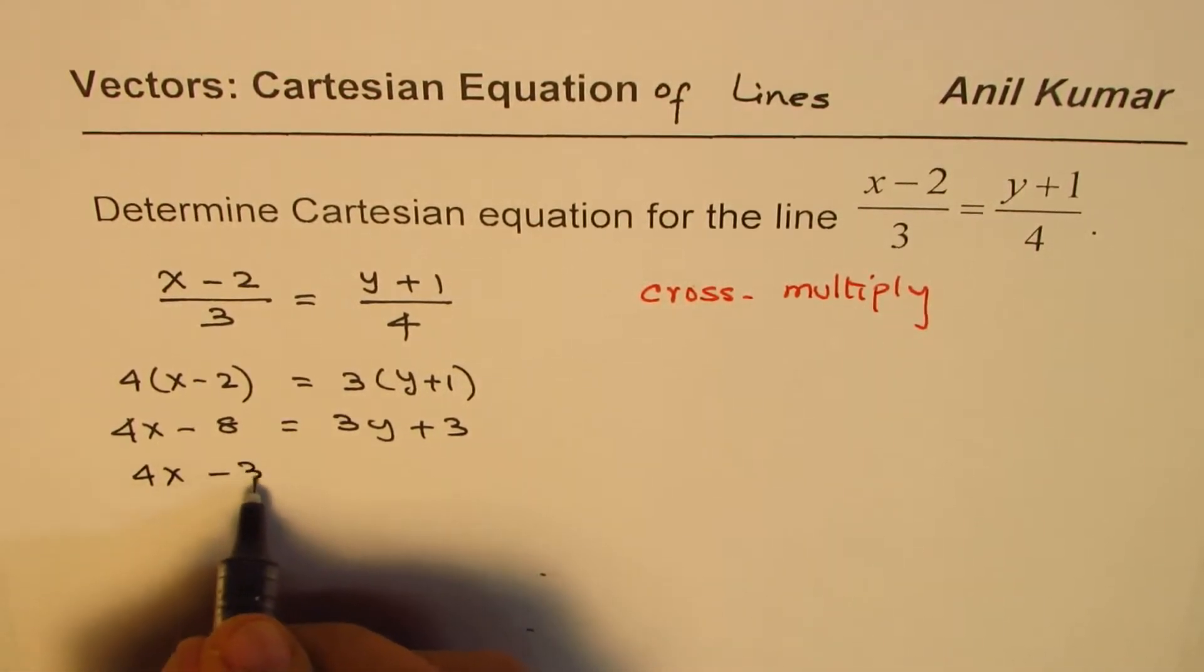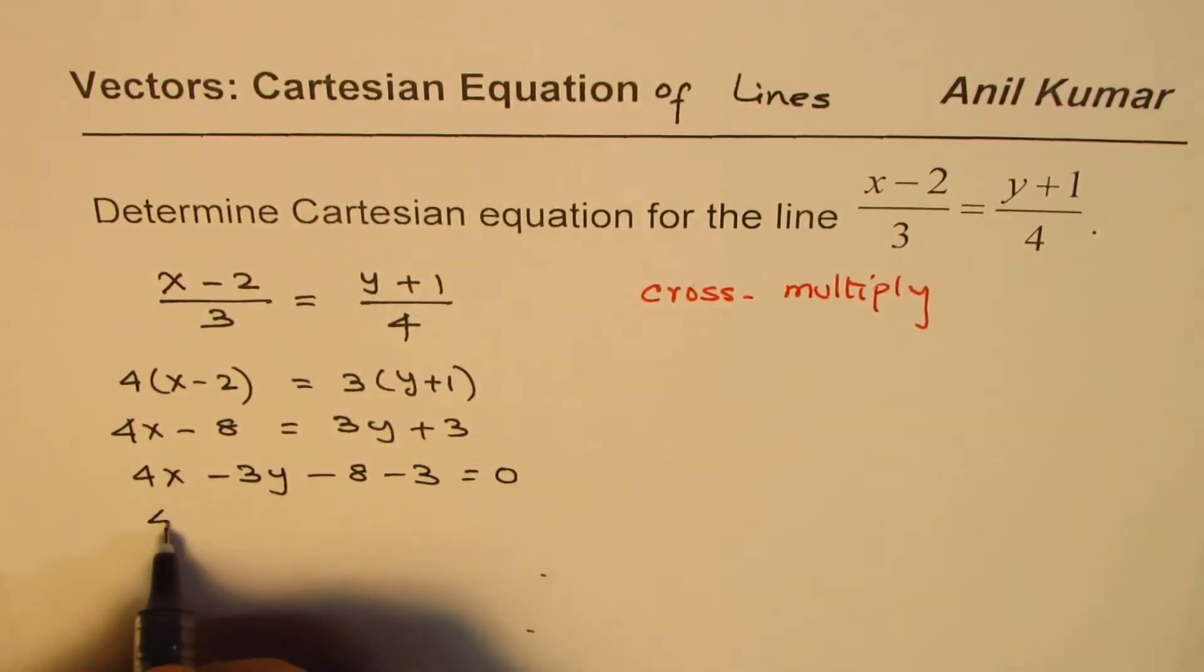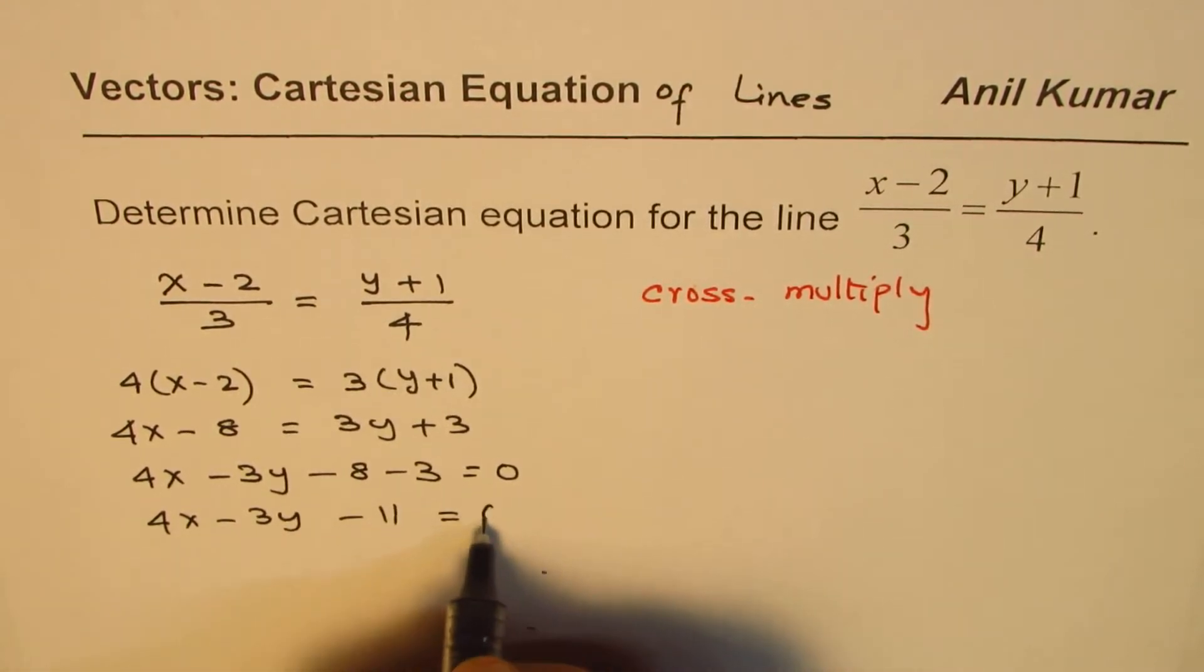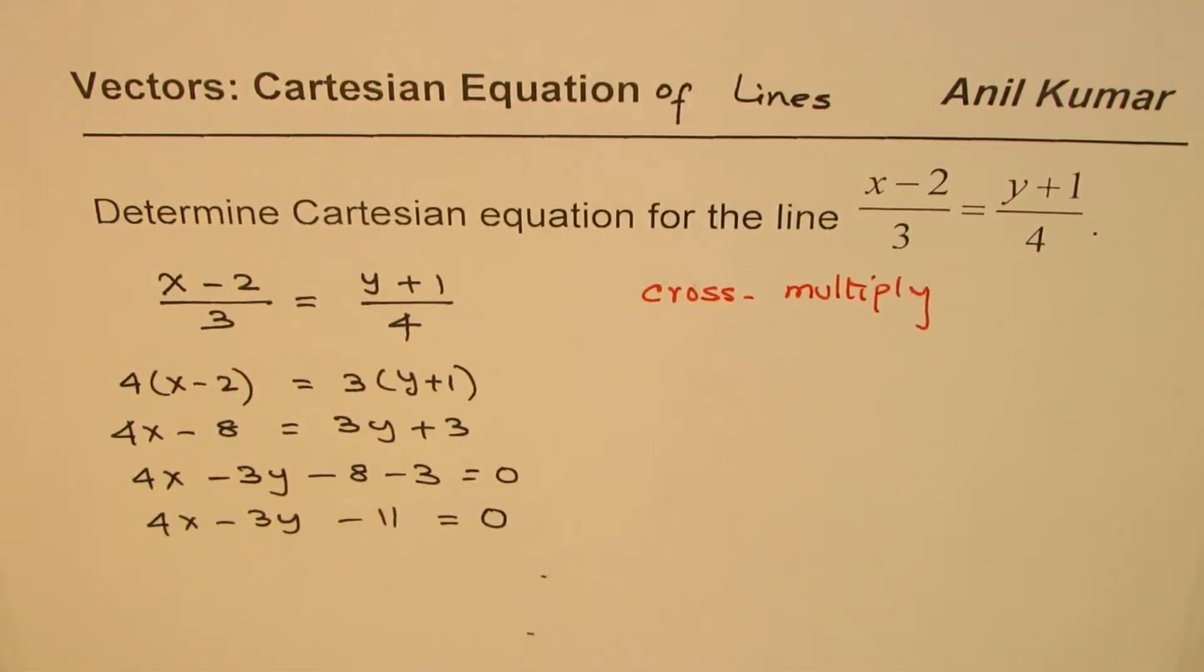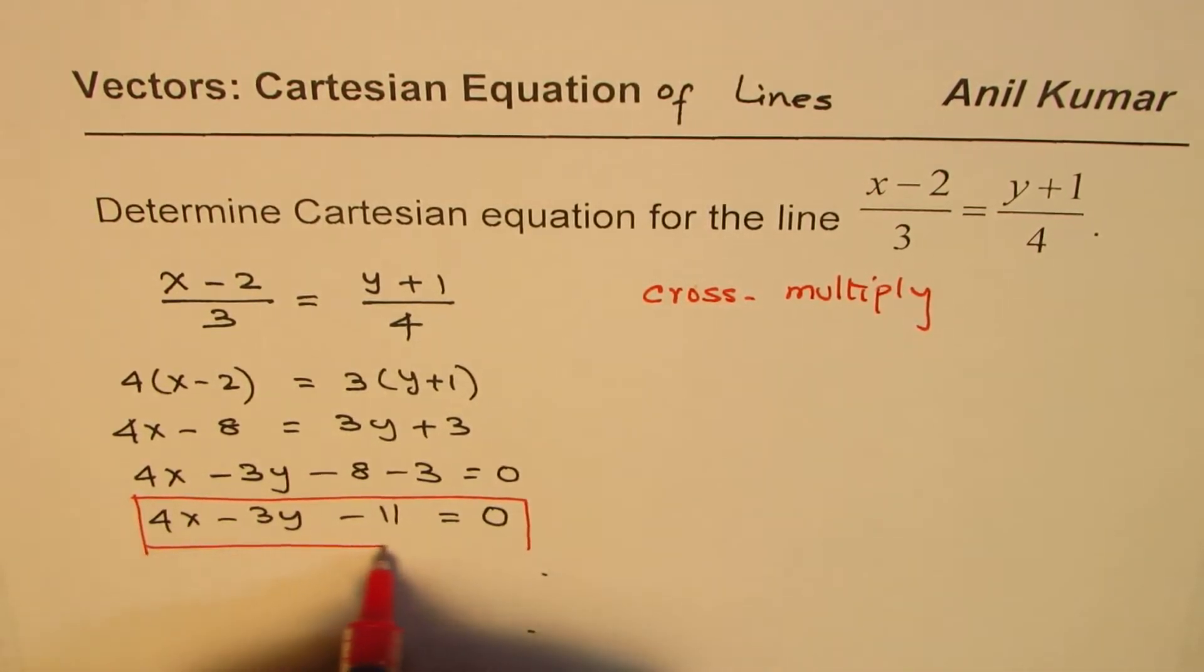Or 4x - 3y - 11 = 0. So that becomes the scalar or Cartesian form of the equation. Do you see that?